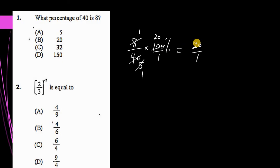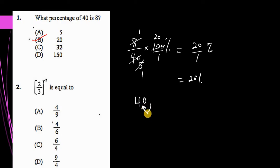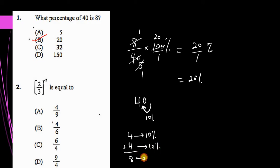1 times 1 gives us 1, and since we have the percentage sign, we put that back. 20 divided by 1 is still 20, so our answer for that question is 20%. There's another approach: if we have 40 and want to find 10% of it, we move the decimal point one place to the left, so 4 represents 10%. Since 8 is double that, 8 represents a total of 20%.